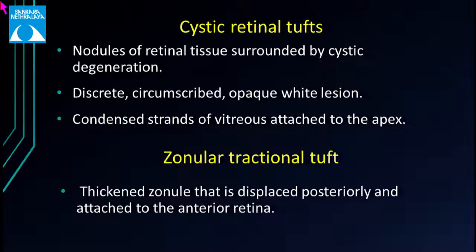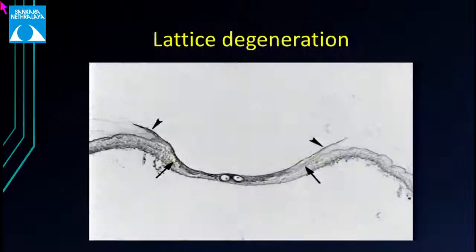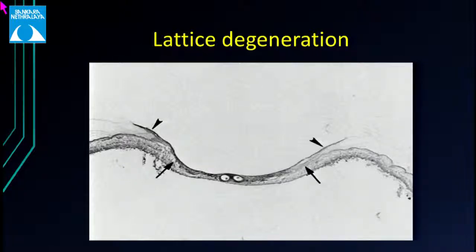Cystic retinal tufts are nodules of retinal tissue surrounded by cystic degeneration, appearing as discrete, circumscribed, opaque white lesions. Zonular tractional tufts are thickened zonules displaced posteriorly and attached to the anterior retina. Both lead to increased vitreoretinal traction and may cause tears, but there is no indication for prophylaxis. Lattice degeneration is the most important peripheral retinal degeneration leading to retinal tears and detachment, characterized by an overlying area of vitreous liquefaction, discontinuous ILM between the arrows, firm vitreoretinal adhesion at the edges, and sclerotic vessels centrally.